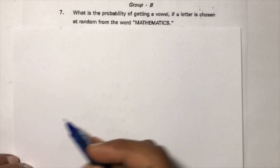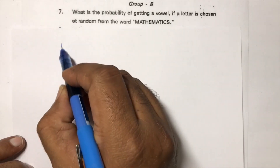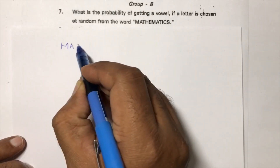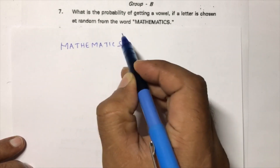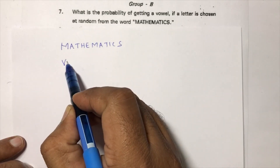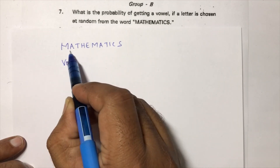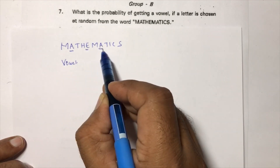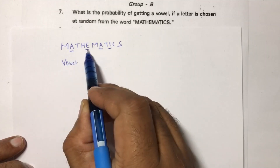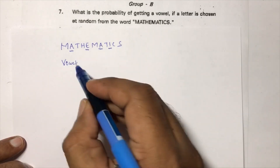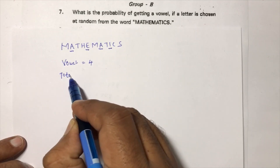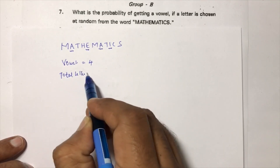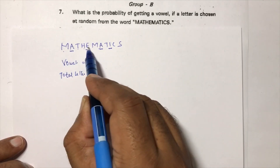What is the probability of getting a vowel if a letter is chosen at random from the word MATHEMATICS? Listing the letters: M, A, T, H, E, M, A, T, I, C, S. The vowels are A, E, A, I — that is 4 vowels in total.